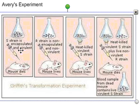Finally, he mixed dead S strain — which won't kill you — with live R strain, which also won't kill you. He mixed them together, and the mouse died. From that, he figured that something had to transform the live R strain into the live S strain. He called that process transformation, and he said there had to be some molecule that made this happen — something we couldn't see — and he called that the transforming agent.